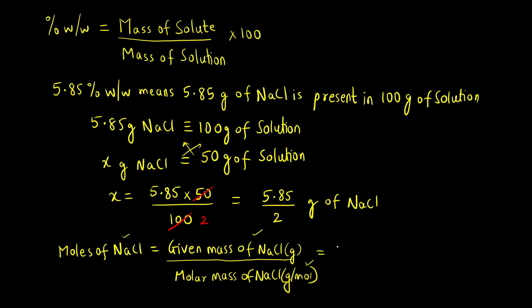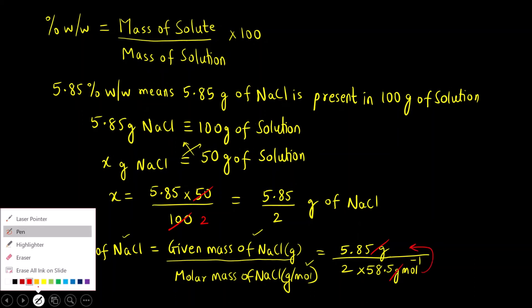We needed moles, so we first calculated mass. Molar mass is already given to us. Mass is 5.85 divided by 2, and this is divided by molar mass which is 58.5 grams per mole. If we cancel the units, gram and gram gets cancelled, mole inverse goes to the numerator and it becomes mole.